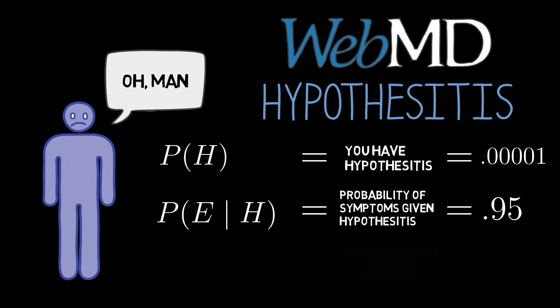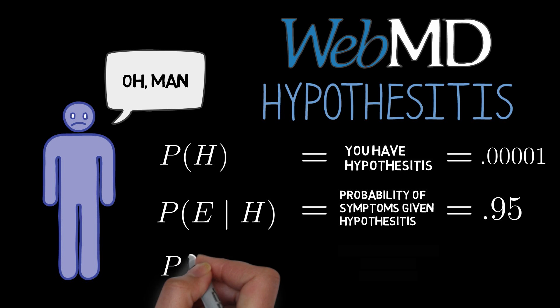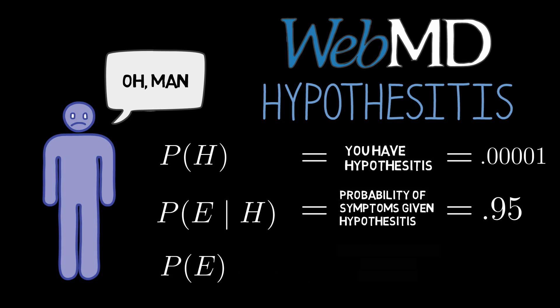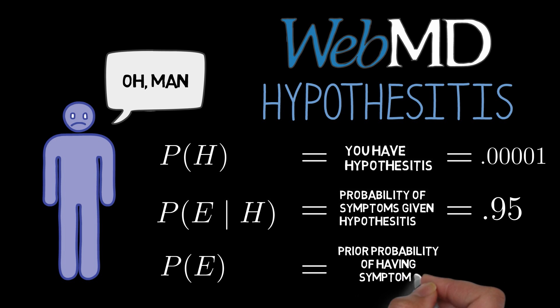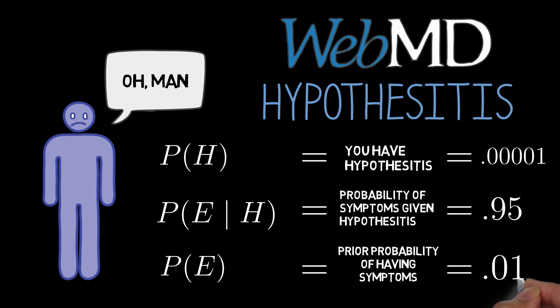Now for the last ingredient. What kind of symptoms are they? Suppose they're very common, like a headache and a runny nose. Lots of people have those. Google tells you 1 in 100. So P of symptoms, your prior probability that you would come down with the symptoms you have, is 0.01.